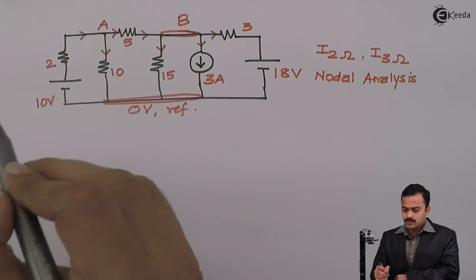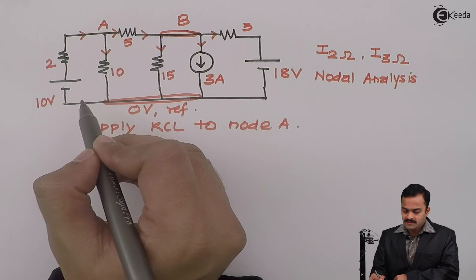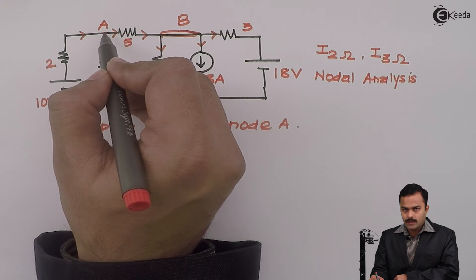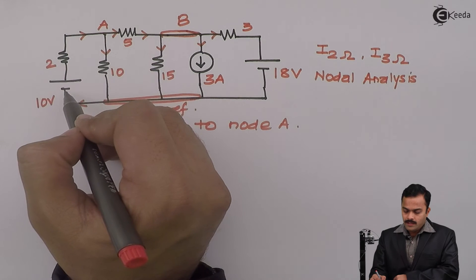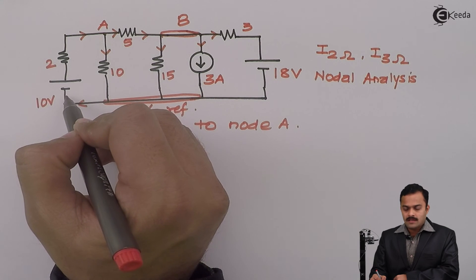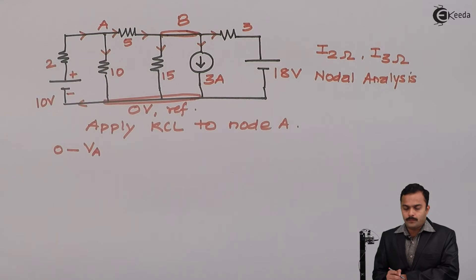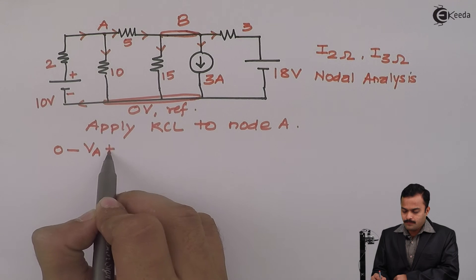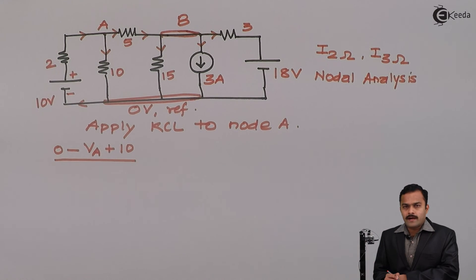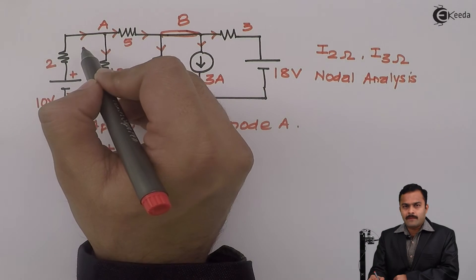Let's apply KCL to node A. This is the incoming current which has started from the reference and ends at node A. So it is reference voltage minus node voltage of A. In the direction of the assumed current there is a voltage source changing polarity from minus to plus, which is a voltage rise. So we consider plus 10 divided by the resistance of this branch, which is 2 ohm. This is the incoming current for node A.